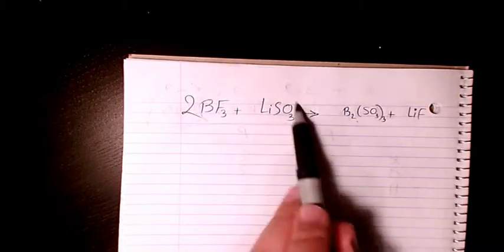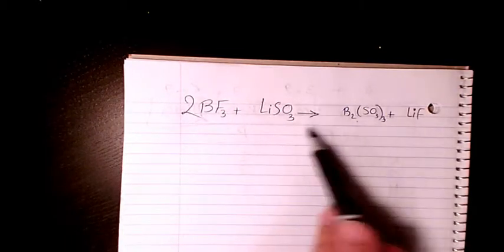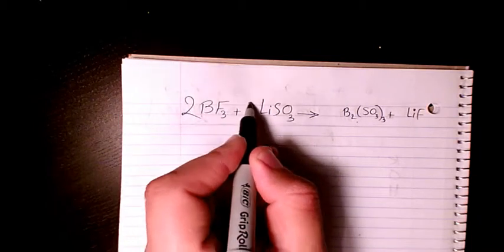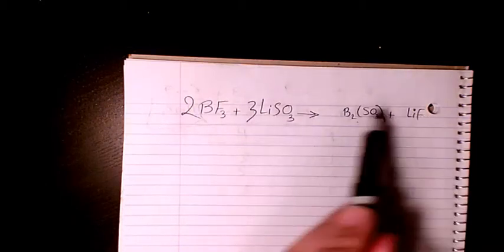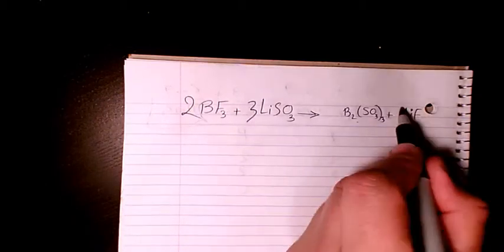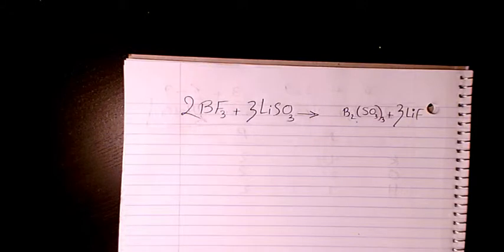We have three of them. On the reactant side, we have only one of them. So in order to balance it, we should put a 3 as a coefficient for Li SO3. So now the lithium is not balanced anymore, so we need to put a 3 here as well. So now again, lithium is balanced.